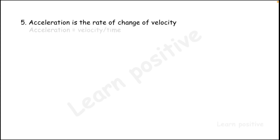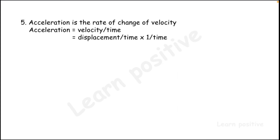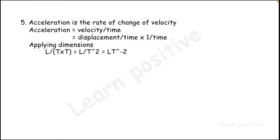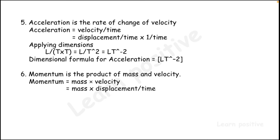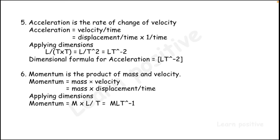Acceleration is the rate of change of velocity, so acceleration equals velocity divided by time. Using displacement divided by time for velocity, we get L divided by T², so the dimensional formula of acceleration is L·T⁻². Momentum is mass × velocity, and using L·T⁻¹ for velocity, the dimensional formula of momentum is M·L·T⁻¹.